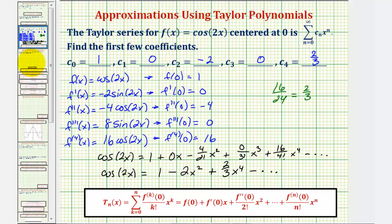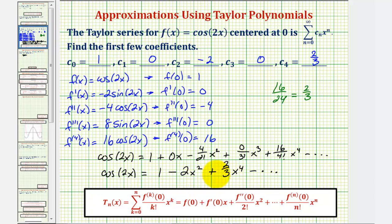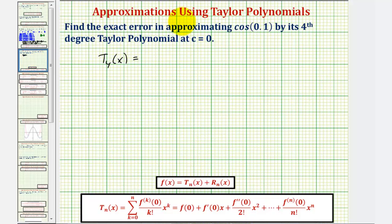For the second part of the question, we find the exact error in approximating cos(0.1) by its fourth-degree Taylor polynomial at c = 0. The Taylor polynomial T₄(x) — also called a Maclaurin polynomial — equals the first three terms of our series: T₄(x) = 1 − 2x² + (2/3)x⁴.